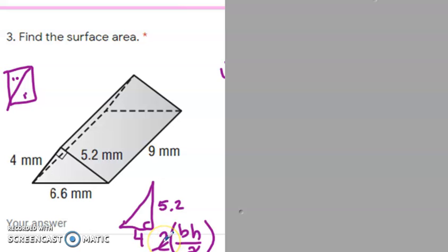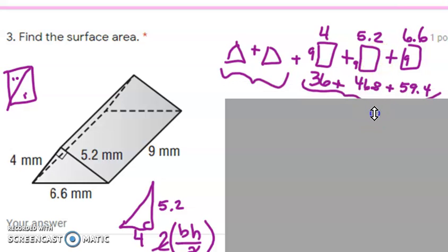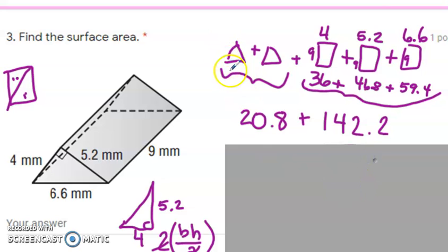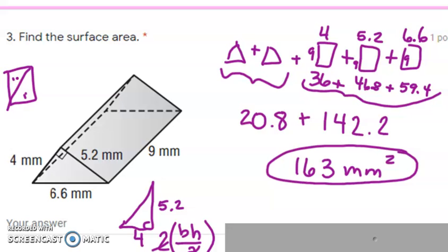Base times height divided by 2 is that triangle, but we've got two triangles. If you look at a rectangle and divide it, you get two triangles, so it's really just base times height — the two twos cancel out. Then we've got three rectangles, all with a length of nine: nine times four, five times 9 — wait, 5.2 times nine for this side — and the one sitting on is 6.6 times nine. I multiplied all those and then added them up. I did base times height for the triangles to get that, and added the three rectangles up, getting a grand total of 163 square millimeters.